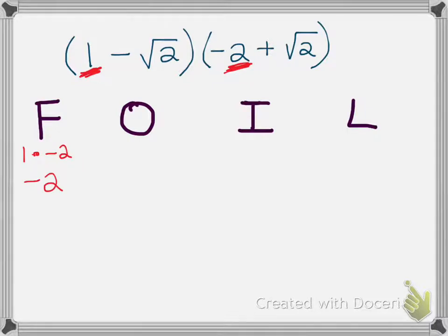Now for my O, which represents outer, we're going to look at the outer terms, which is going to be the 1 and that square root of 2. So 1 times square root of 2 is just going to equal square root of 2.